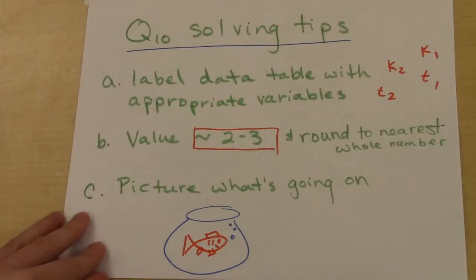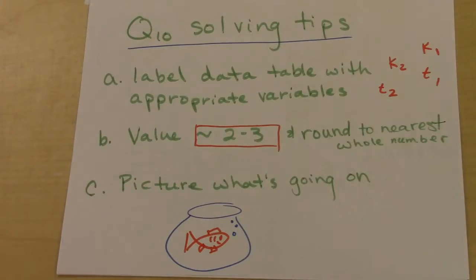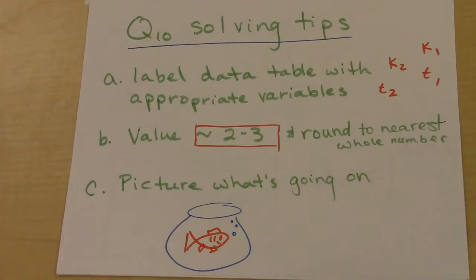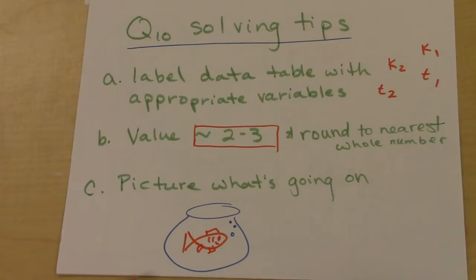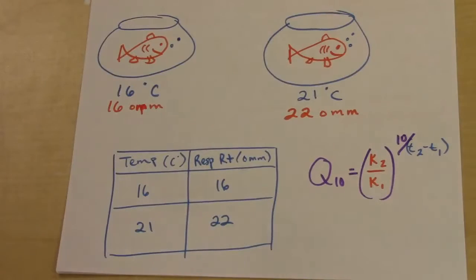Some tips for solving problems involving Q10: first, it's always good to label your data table with the appropriate variables, otherwise it's easy to get mixed up. Also, your answer should be between 2 and 3 in that ballpark — if you're getting answers like 15 or 48, go back and check your calculations. It's also good to round to the nearest whole number as you go. I always like to picture what's going on — sometimes I draw it out — to keep the information organized in a way that makes sense.